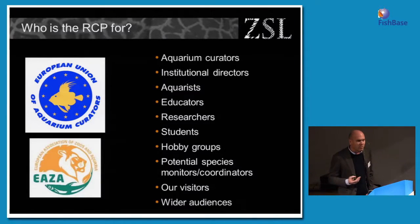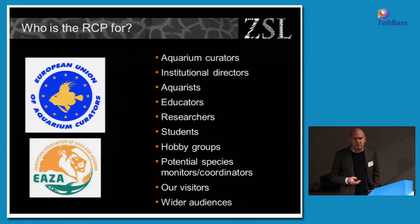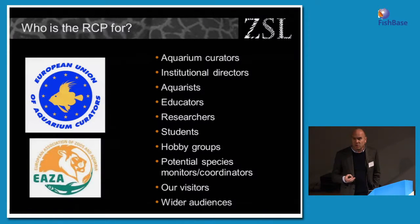So who is it for? It's obviously for people like me — aquarium curators making decisions about the species in their collections. But it's also for our directors, aquarists, educators, researchers and students that work in our collections. And it's also for people outside of the zoo community: hobby groups, potential monitors and coordinators, and of course our visitors and wider audiences. The regional collection plan is available for everyone.